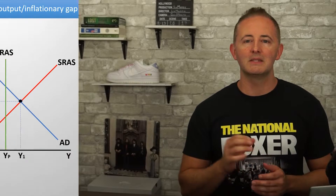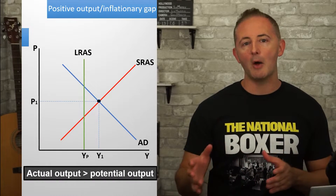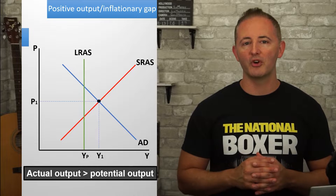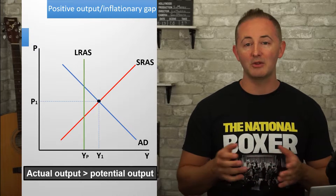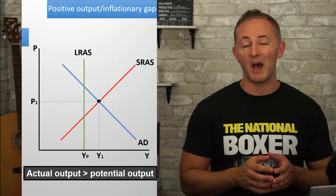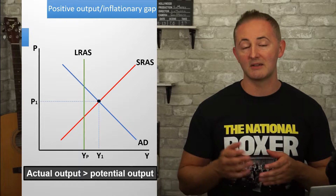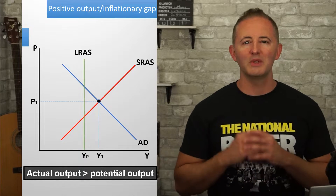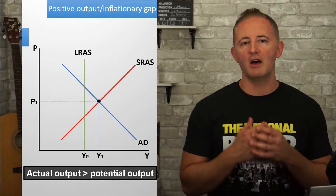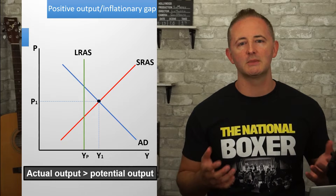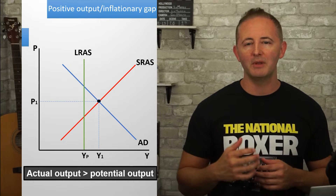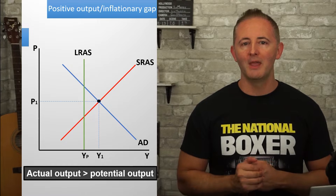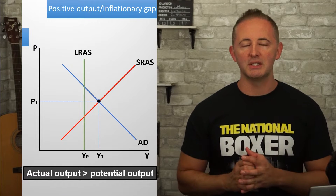We'll do the inflationary gap first. This is also known as a positive output gap, and refers to the fact that actual output is greater than potential output — caused either by a positive demand or positive supply shock. This raises the question of how it's possible for an economy to produce a level of output greater than potential output, and the answer is sticky wages.